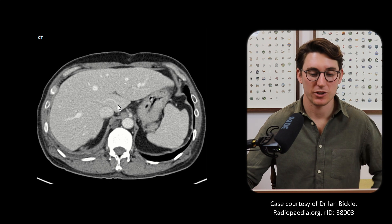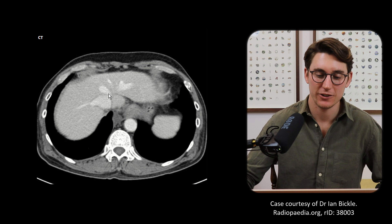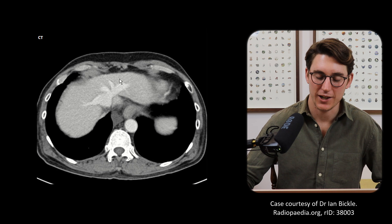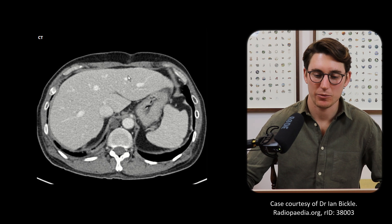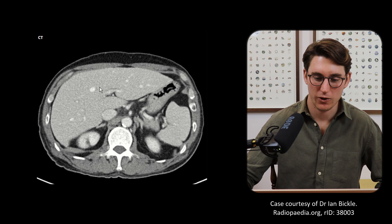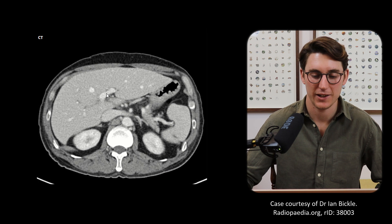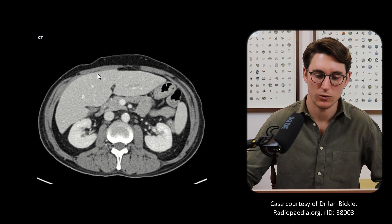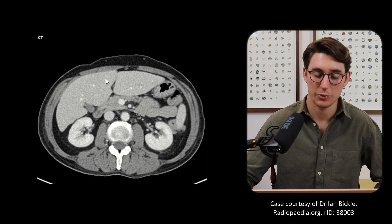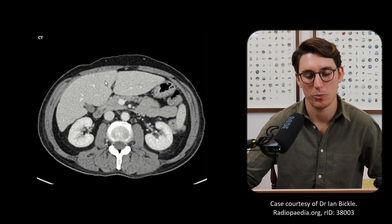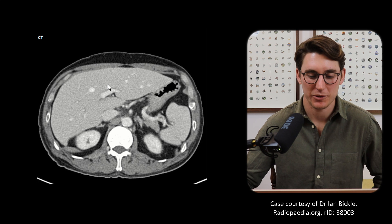Heading back up to the top of the liver, we have 4a and 4b on that left medial segment. In between our left hepatic vein and our middle hepatic vein, all of this is segment 4a — it stays 4a all the way down until we get to the level of our left portal vein. Below that is segment 4b all the way down. All of this section is segment 4b. So if we were to see a lesion here, we could confidently write in our report 'this is segment 4b' and the person reading that report will understand exactly where we're talking about.